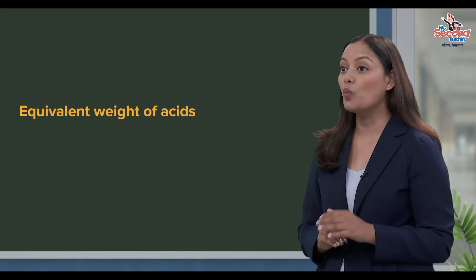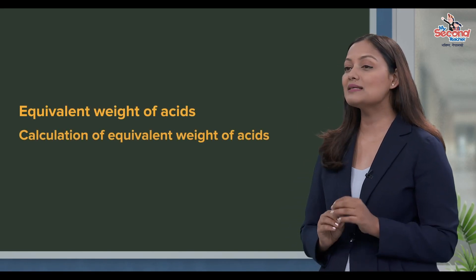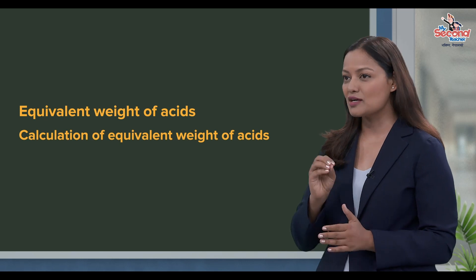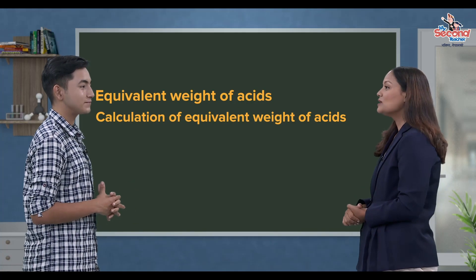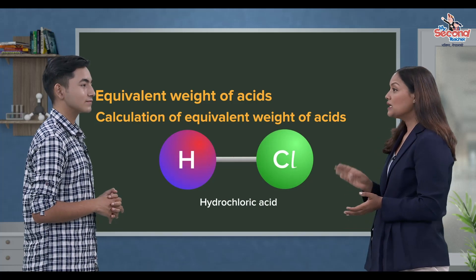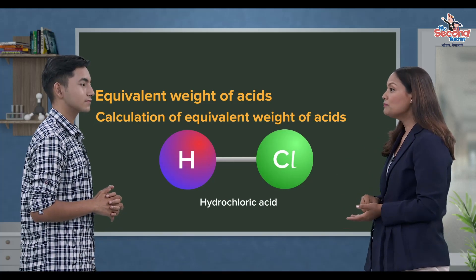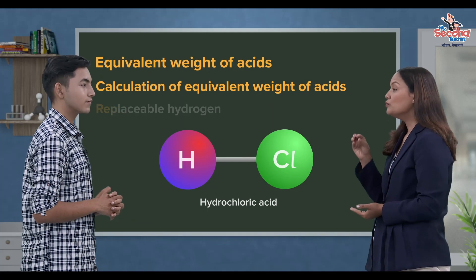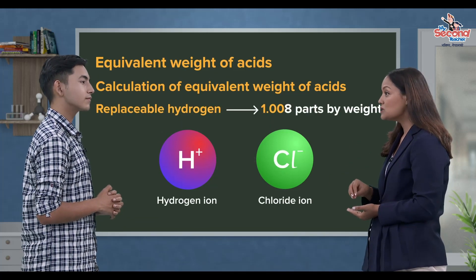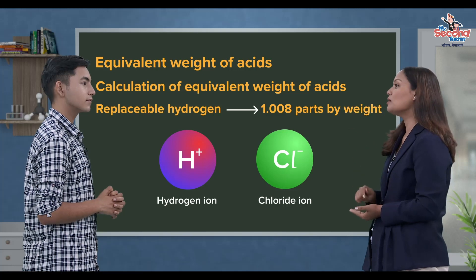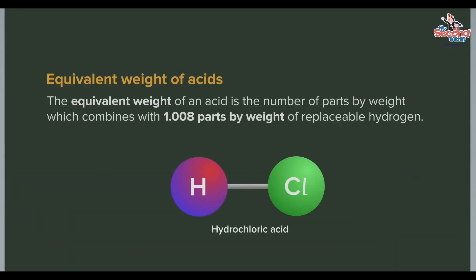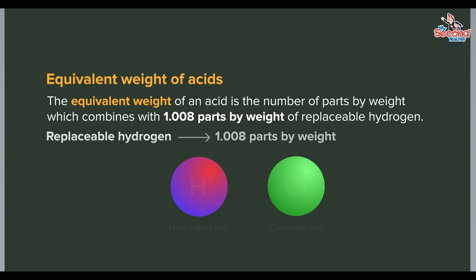Aaza aami acid ko equivalent weight bhanhe ko khi ho? Ra es lai kose re calculate karne ra discussion shuru gara hon. Acid ko equivalent weight bhanhe ko, tiyo acid ko kothi parts by weight mei replacable hydrogen ko 1.008 parts by weight chao bhanne ho. In other words, the equivalent weight of an acid is the number of parts by weight of it which combines with 1.008 parts by weight of replaceable hydrogen.